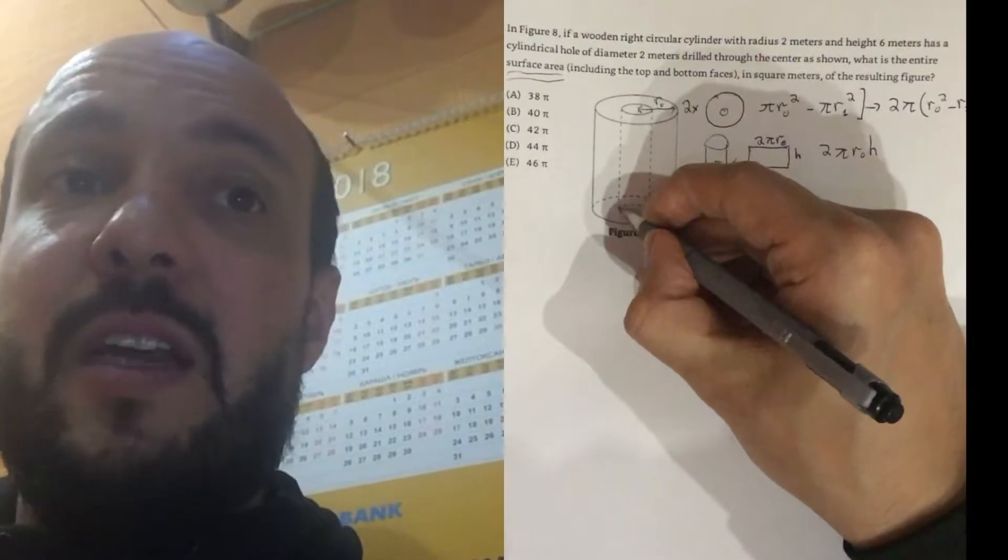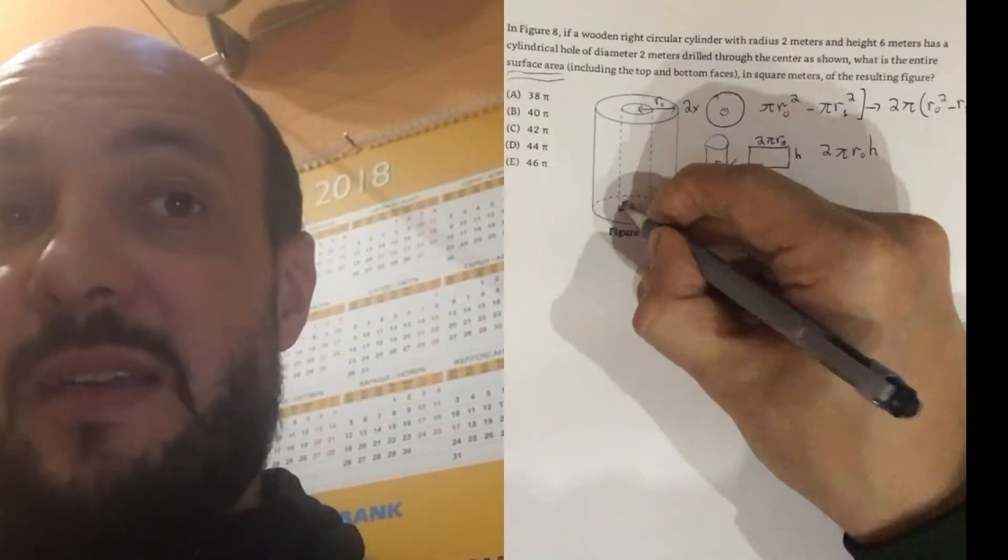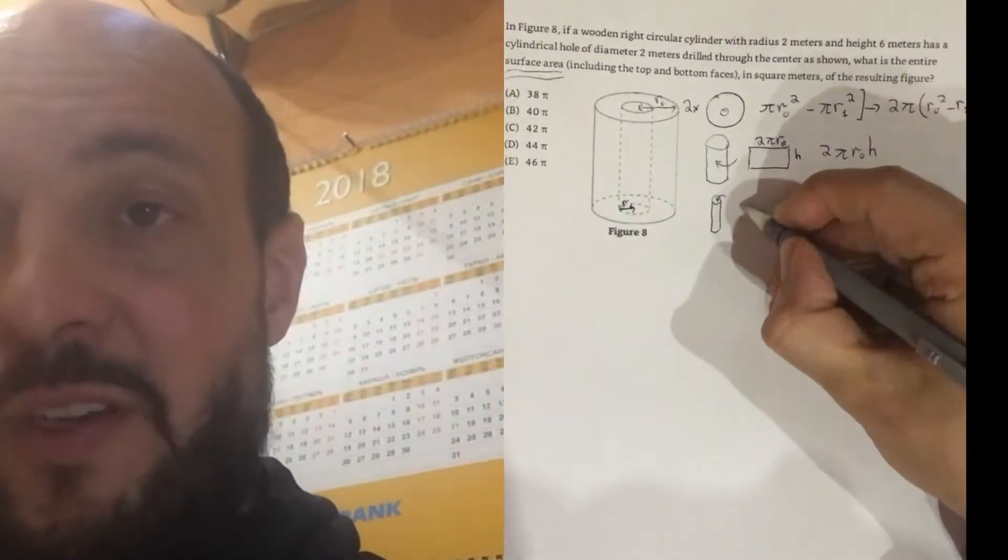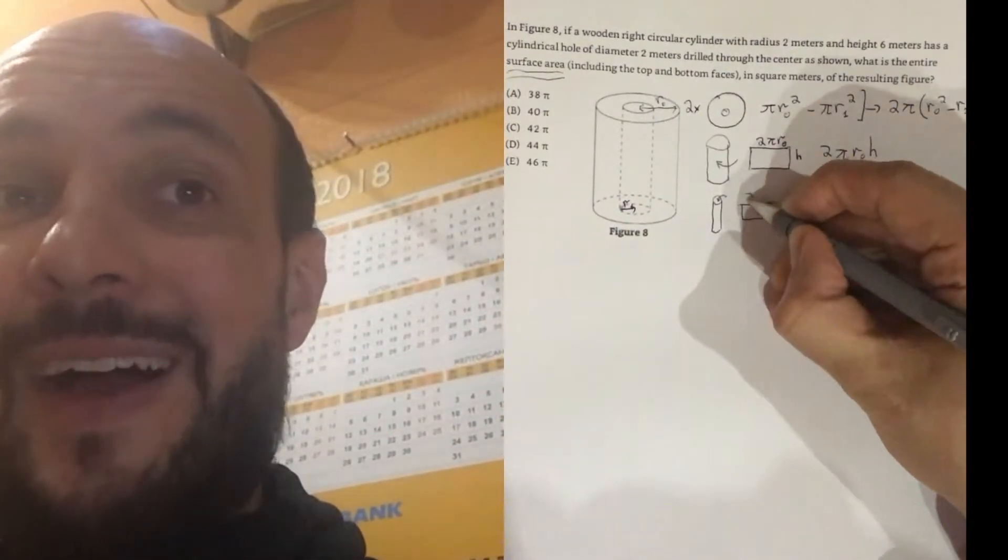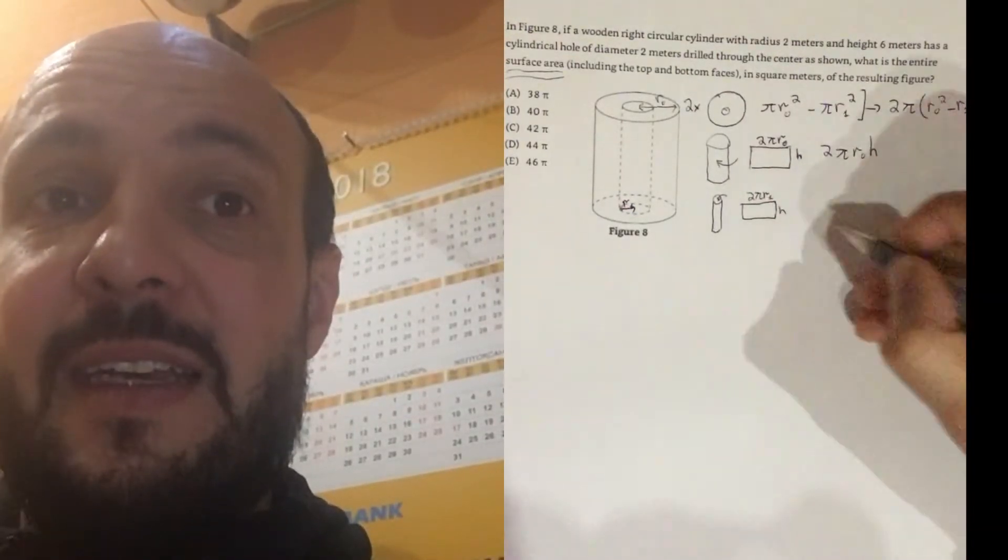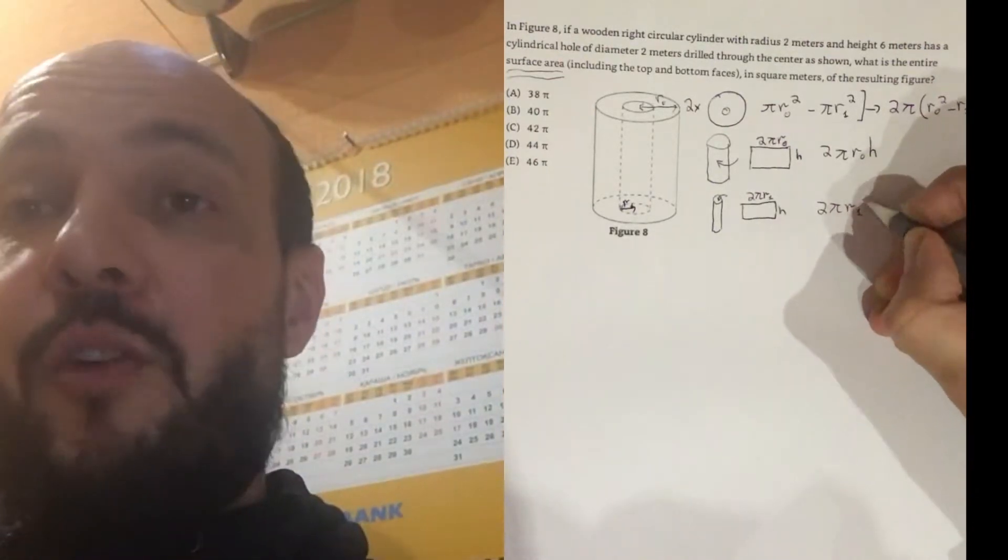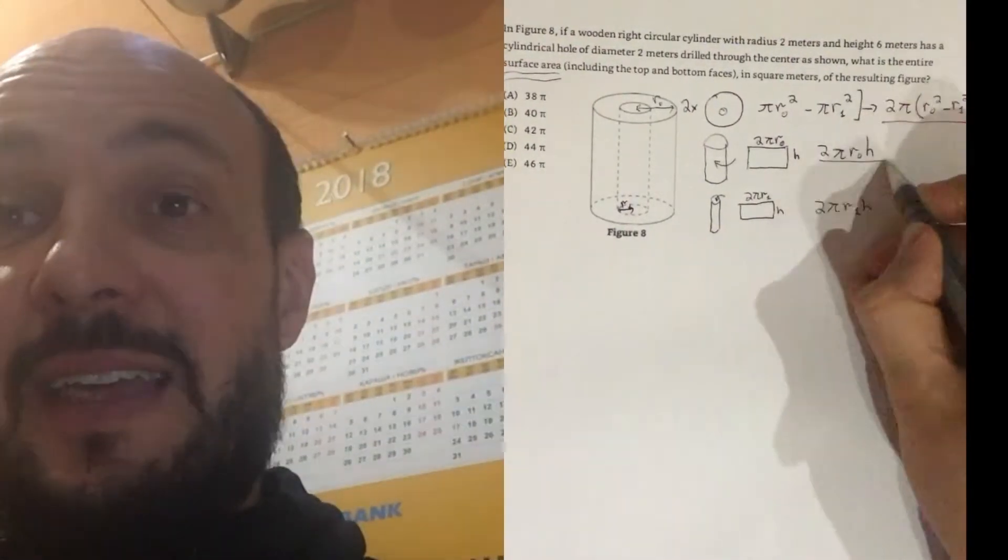Now, the process for this smaller cylinder, where the cylindrical hole is inside, is very similar. So, we've got the circumference of the circle at the top, which is 2 pi times by r1, and it's exactly the same height, the height of the cylinder. So, we've got 2 pi r1 h.